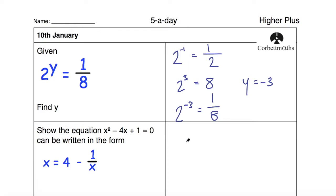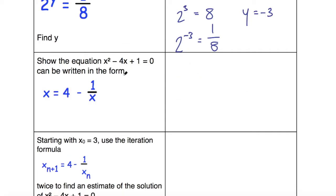If you got this question in the exam, you wouldn't have to show any of this work and you can just jump straight to your answer—I just use that for my explanation. The second question here says: show the equation x² - 4x + 1 = 0 can be written in the form x = 4 - 1/x.